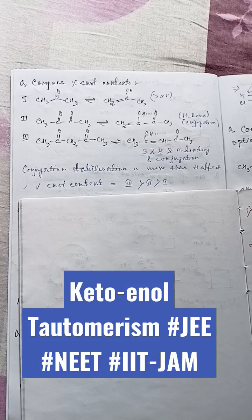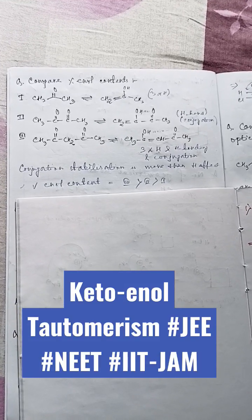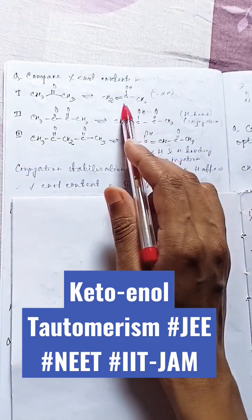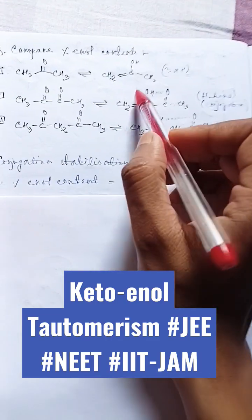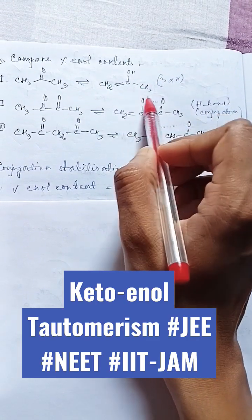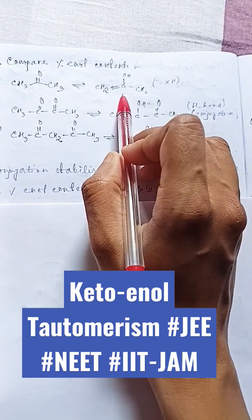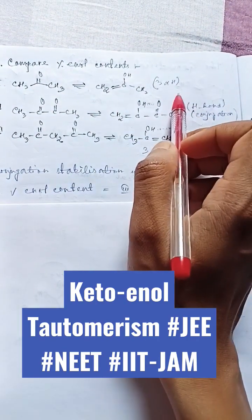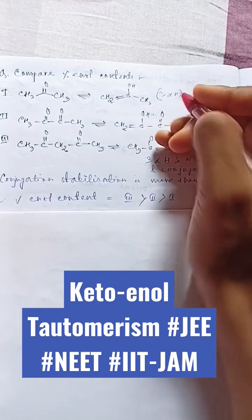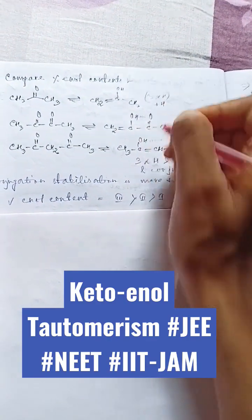This is the second question on enol content percentage. In the first example, the enol form gains stability due to the free alpha hydrogen — the enol form gains stability only due to the hyperconjugative effect, the +H effect is operating here.